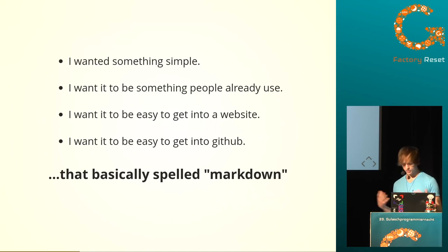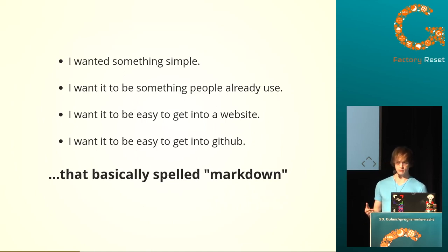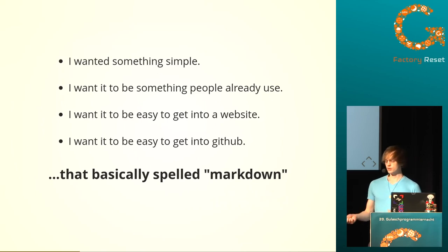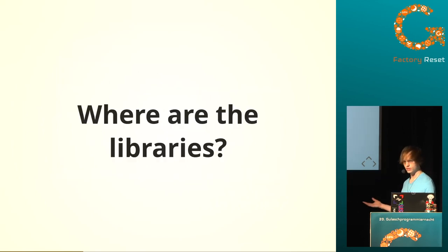So I wanted to solve this with automation and I worked on TestMark to fill this burning hole in my heart. I wanted it to involve a format that is simple and something that people already use — something that's easy to get into a website. Basically all static website generators know what Markdown is these days, and I want it to be easy to just render it on GitHub, for when I'm in a project that's too early, too small, or too lazy to have made a website yet. So: Markdown.